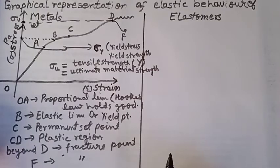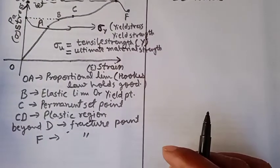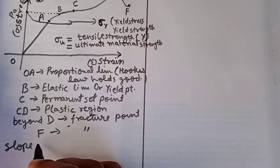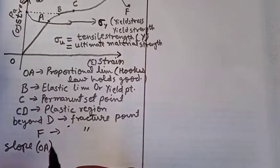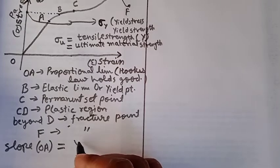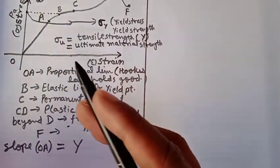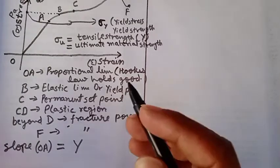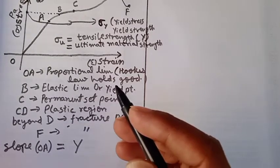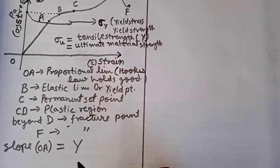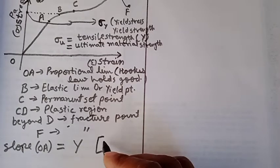A few other things from this graph we can obtain: the slope of graph from O to A only gives the value of Young modulus. Actually, mostly this graph is related to longitudinal stress and strain only. That is why the value of Young modulus comes out. Otherwise, we can say elastic constant.